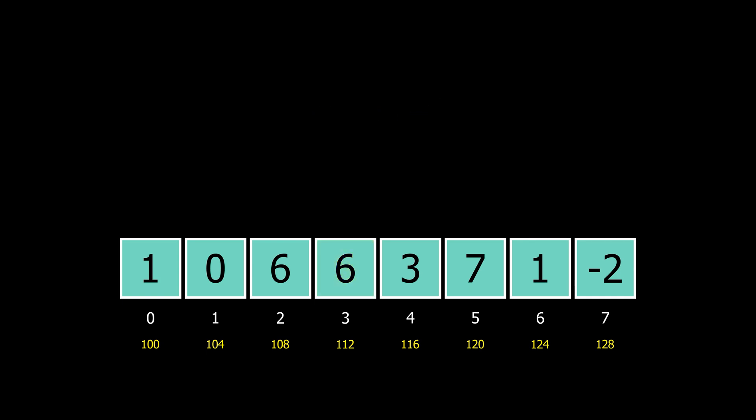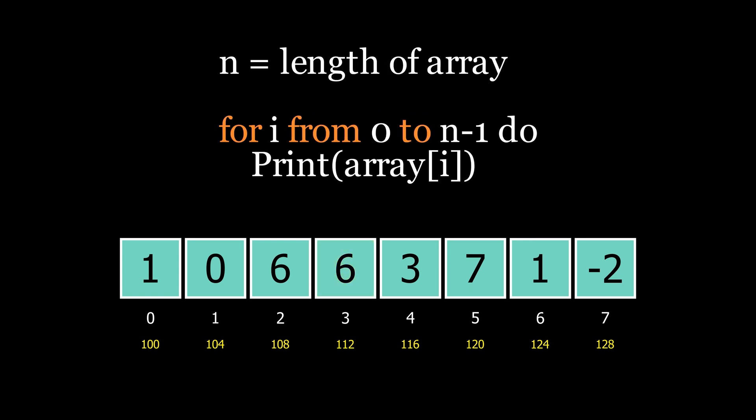Now the next operation is traversing the array and getting the values. So here n is the length of the array, and we need to loop over the whole array once and in each iteration print the value.